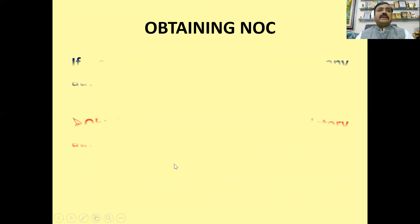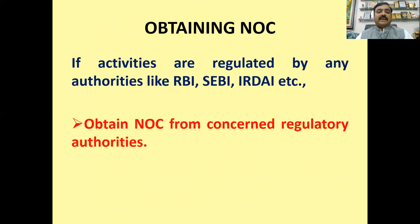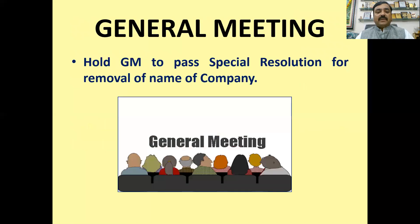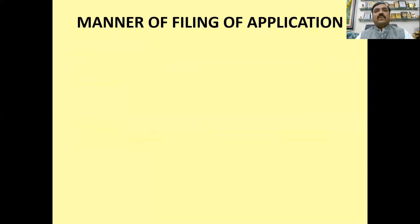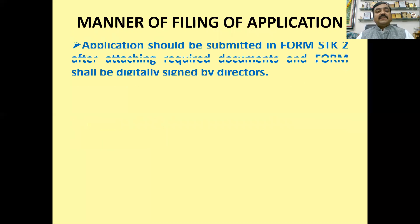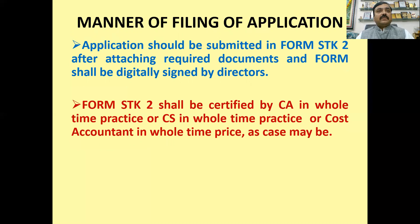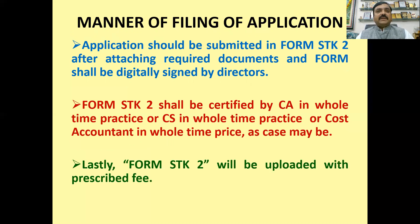Next, if the company is regulated by any regulatory authority, prior approval from that authority will be required. If the company needs to hold the meeting, then the approval will be attached. Now for the final procedure: the company will download form STK-2 from the MCA site and fill it with the director's signature. That form is certified by a CA, CS, or cost accountant who is in whole-time practice, and STK-2 will be uploaded with the prescribed fees.